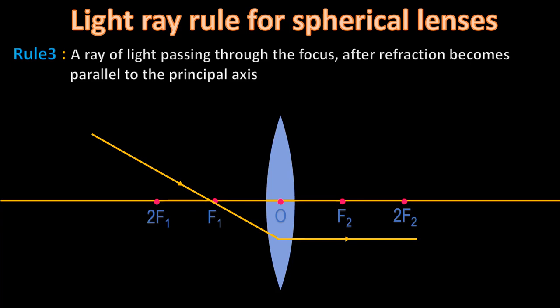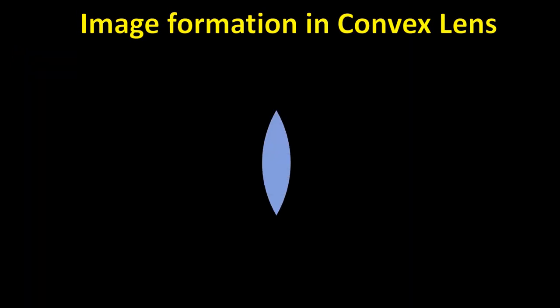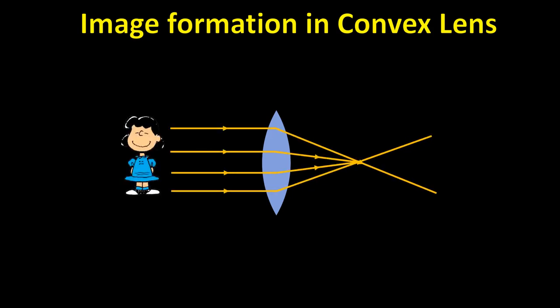Notice that Rule 3 is exactly opposite to Rule 1 — this is due to the reversibility of light. When light passes through the convex lens, the ray above bends downwards and the ray below bends upwards after refraction. So we always get an inverted image through a convex lens. When drawing a ray diagram, you need to draw two rays from a point on the object, selecting any two of the three rules.